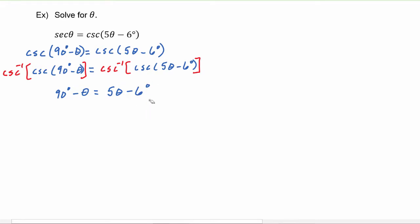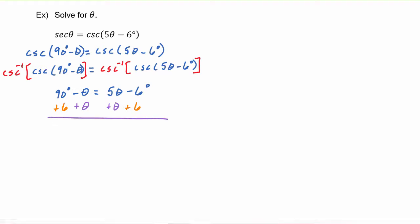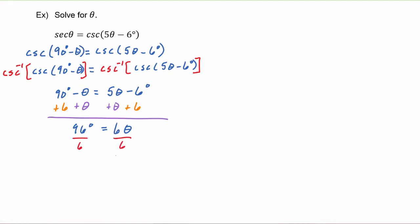Combining like terms, we add six to both sides and add theta to both sides. The left-hand side becomes 96 degrees and the right-hand side becomes six theta, so theta is equal to 16 degrees.